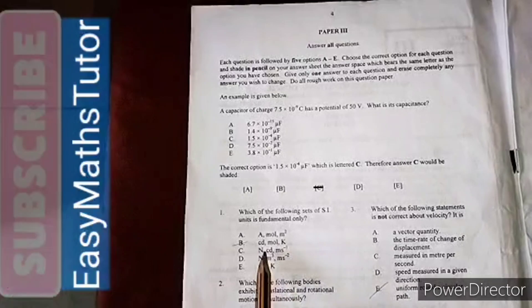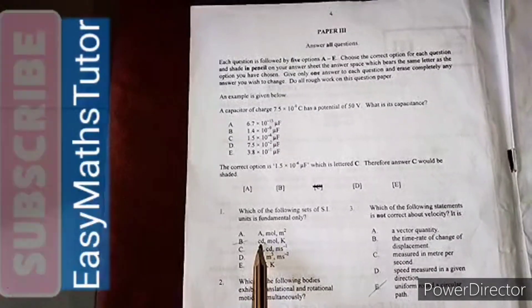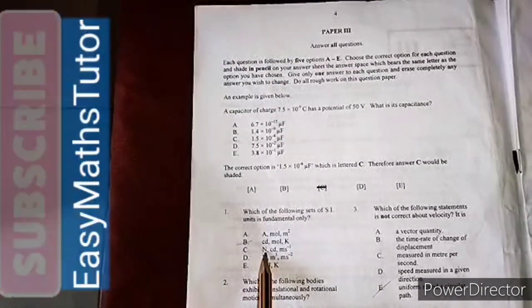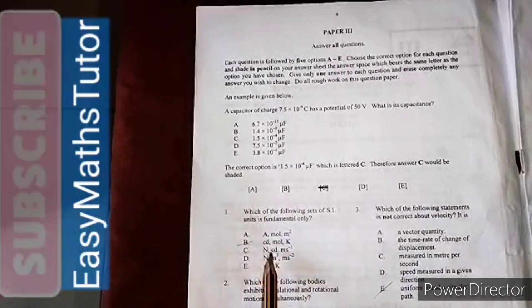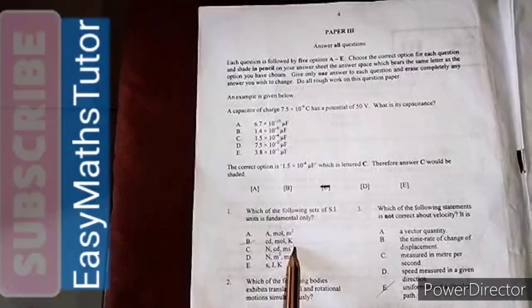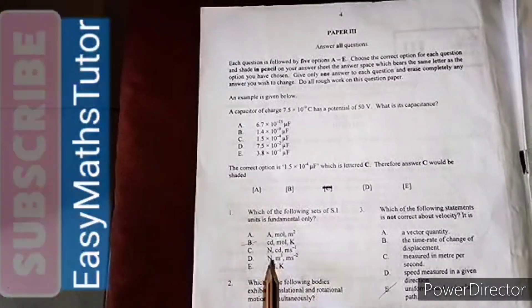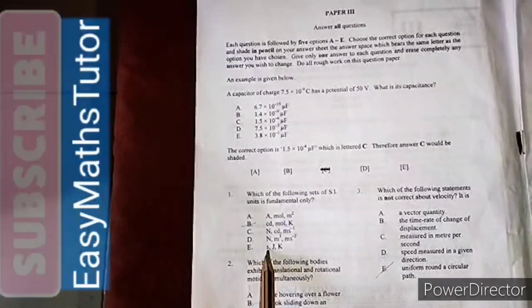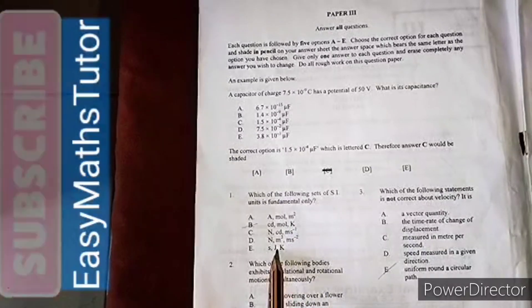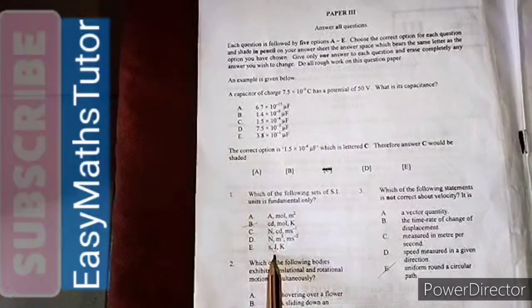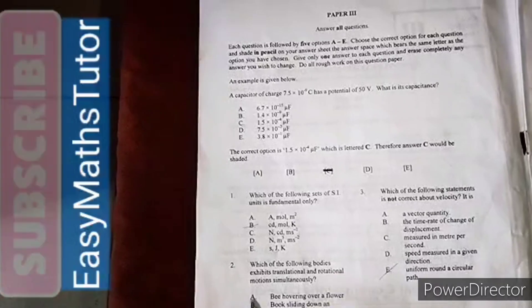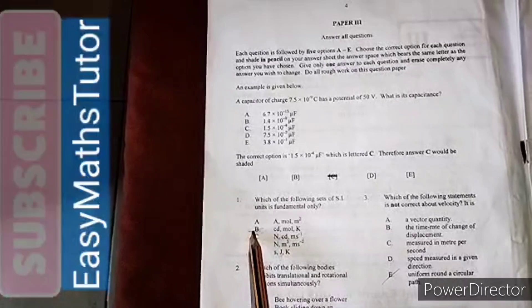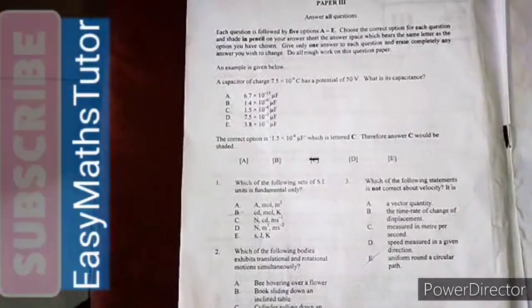Second is candela, mole, and Kelvin. Next is Newton, candela, meter per second - this is off. Newton, meter cubed, meter per second squared - off. Second, joule, and Kelvin - because of the joule it's off, as joule consists of about two or three other quantities. So our correct answer will be B.